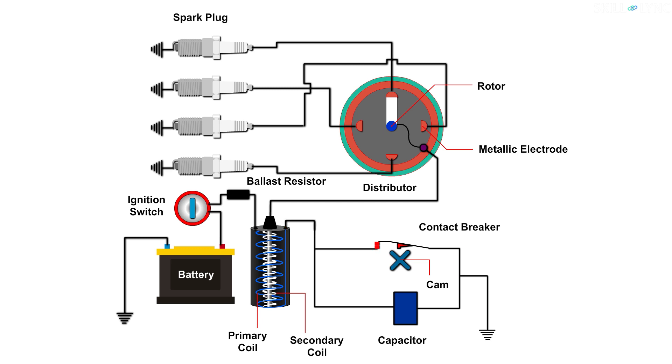The other end of the primary coil is connected with the secondary coil and one end of the contact breaker. The contact breaker is grounded at the other end and the capacitor is connected in parallel with it. The battery, ignition switch, ballast resistor, primary coil, contact breaker, and the capacitor make up the primary circuit.